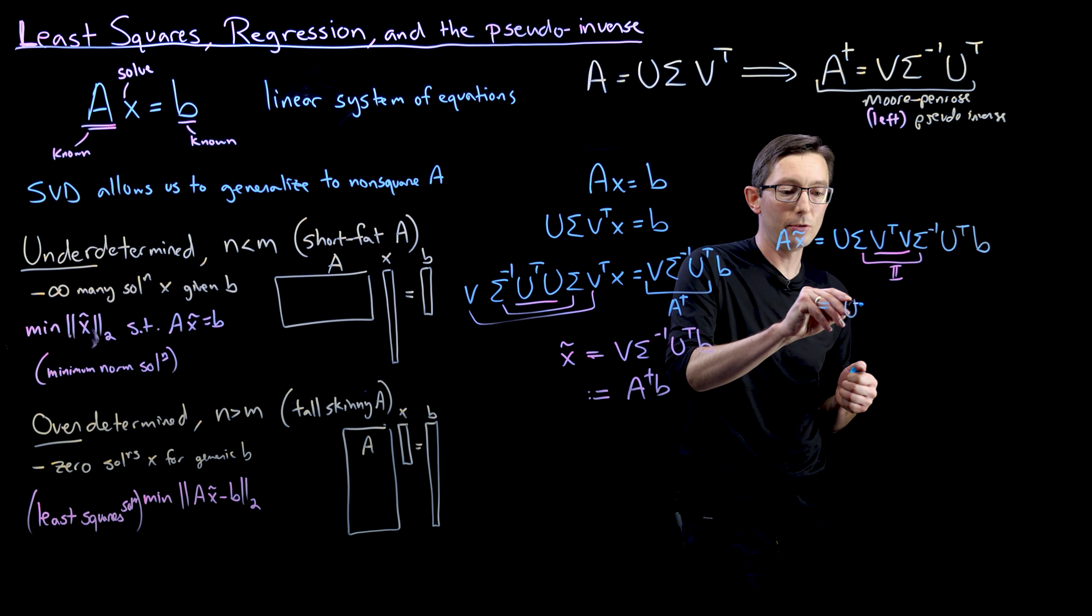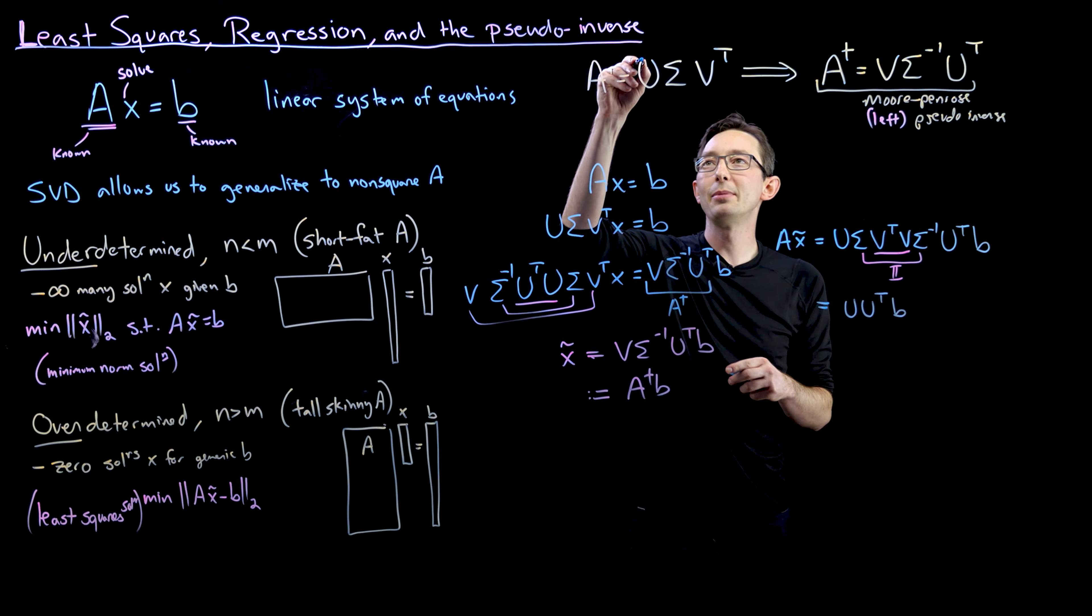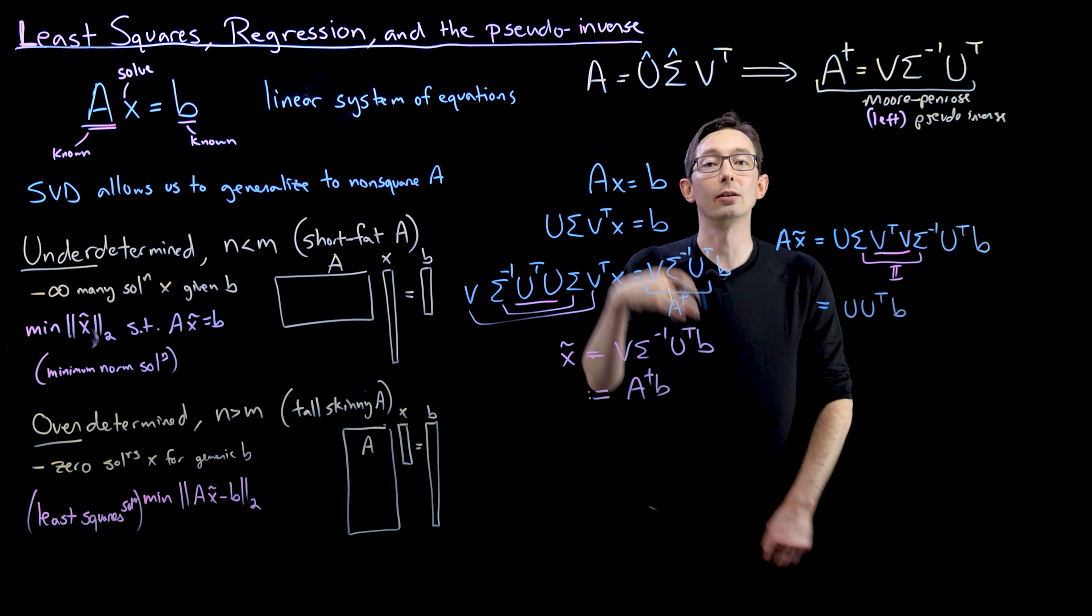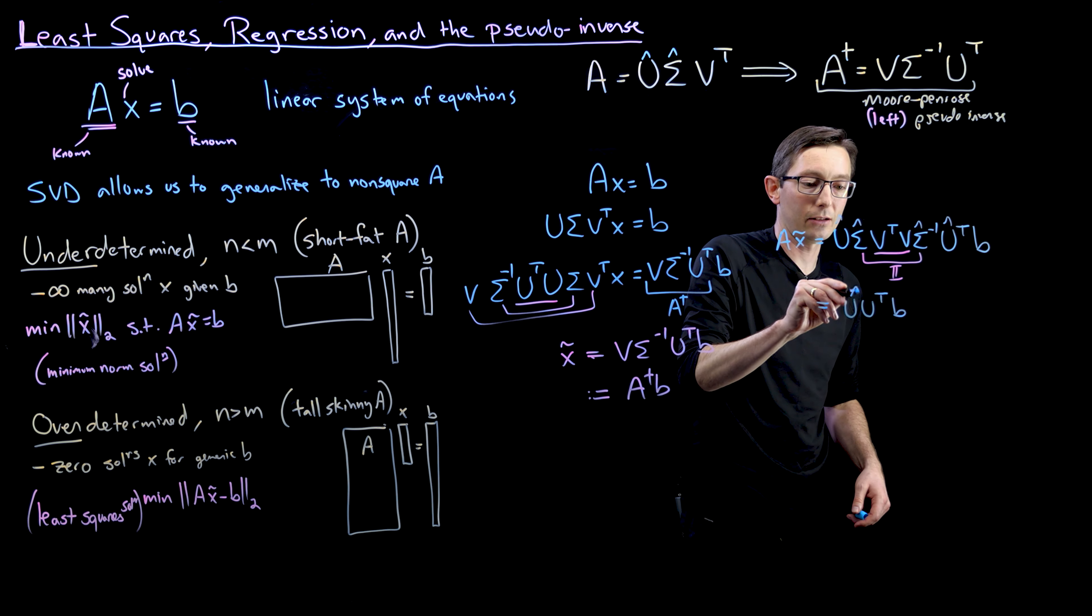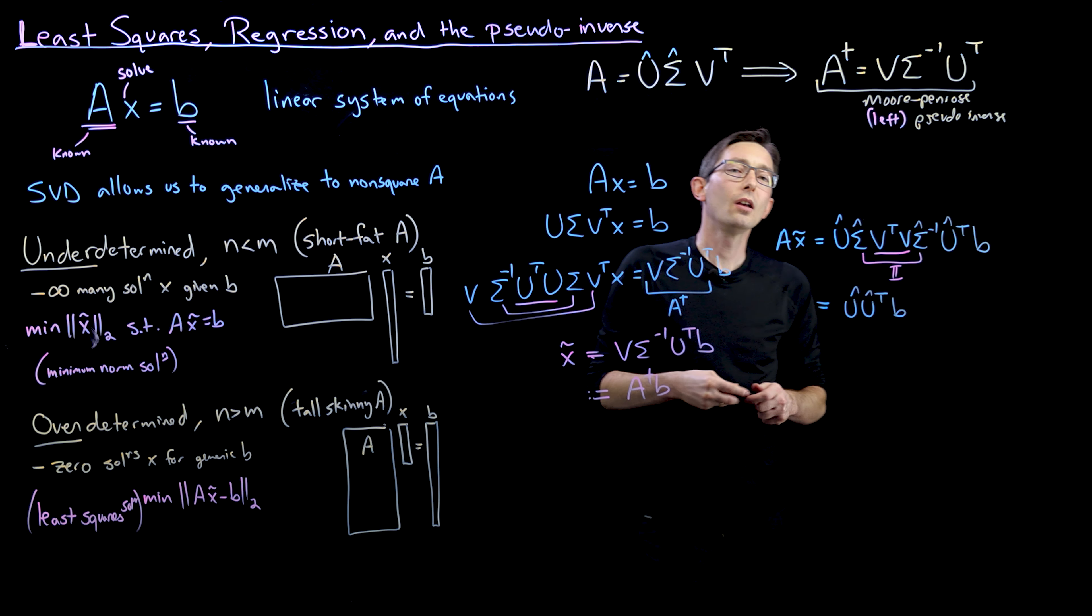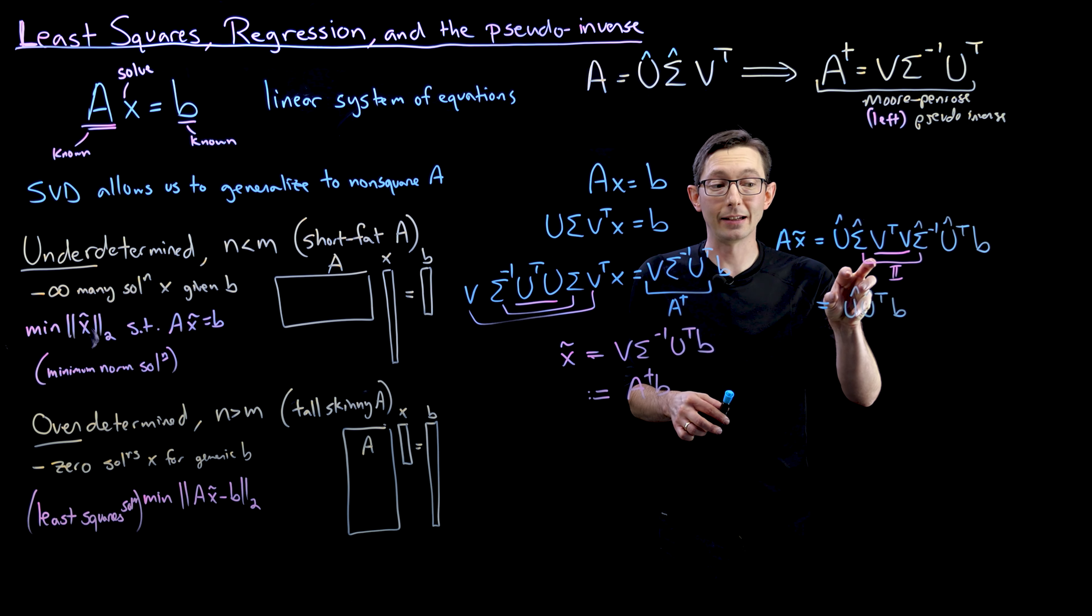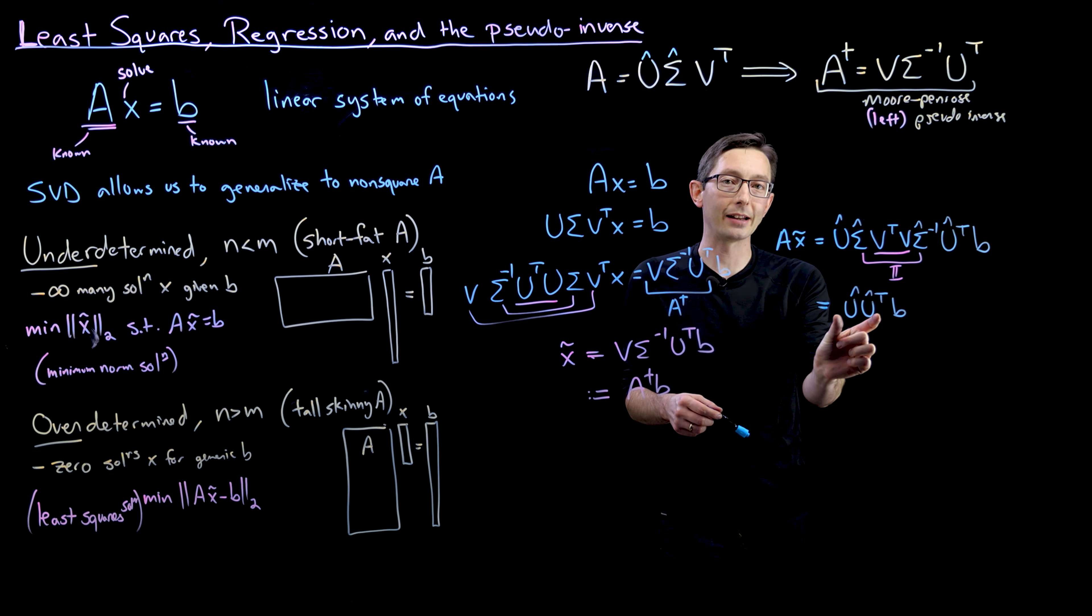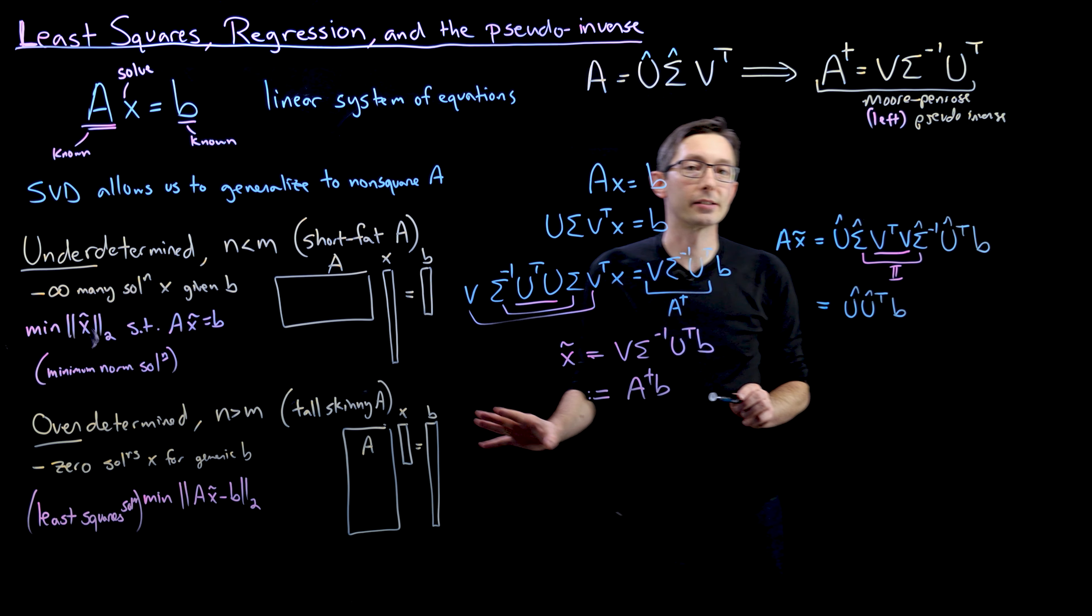So this equals U U transpose B. And I'm going to be very explicit. I'm going to re-add my hats here. This is the economy SVD, or a truncated SVD, and so these are hat quantities. This U U transpose is not the identity. If it was, then this would equal B. But because this is not the identity, this does not equal B. And that's why this is not exactly solved.